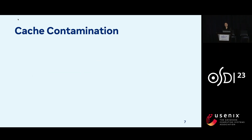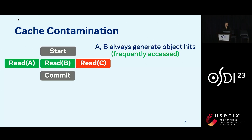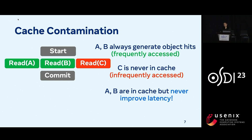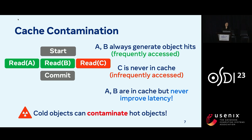Generalizing this principle, we observe a phenomenon we're calling cache contamination. A and B are very popular keys — they generate a lot of object hits, so most caching algorithms will choose to retain them in cache. On the other hand, C is less popular, so it's more rarely found in cache. We get into the scenario where A and B are always in the cache, but they're never actually helping overall transaction latency. Our key insight is that cold keys can contaminate or affect the cacheability of hot objects, and this should be taken into consideration when figuring out what keys to keep in cache.